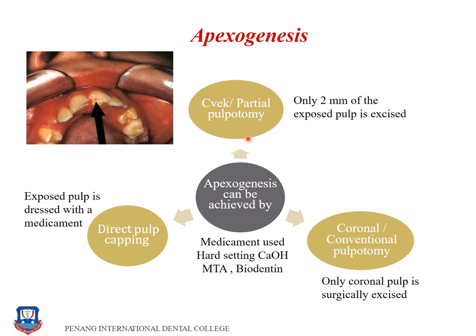The first procedure to achieve apexogenesis is cervical or partial pulpotomy: only 2 mm of the exposed pulp is excised, MTA is placed, and the tooth is restored with GIC as a base and composite as the final restoration. This preserves the vitality of the remaining coronal and radicular pulp, allowing physiological root formation, root maturation, and apex closure.